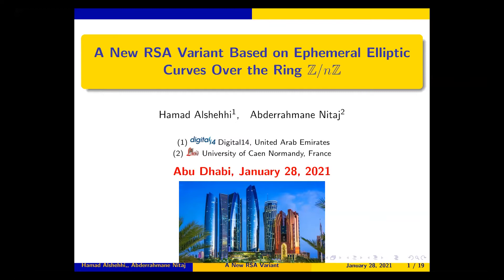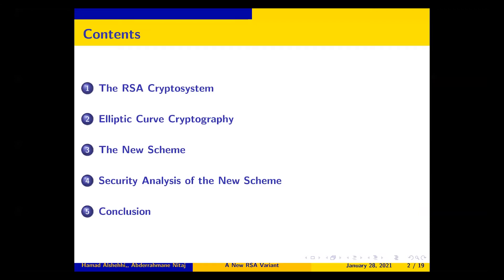Today I will be talking about a new variant of the RSA system, and this variant is based on elliptic curves over the finite ring Z/nZ. I will recall the importance of RSA and elliptic curve cryptography, then present our new scheme, discuss the security analysis, and finish with a short conclusion.